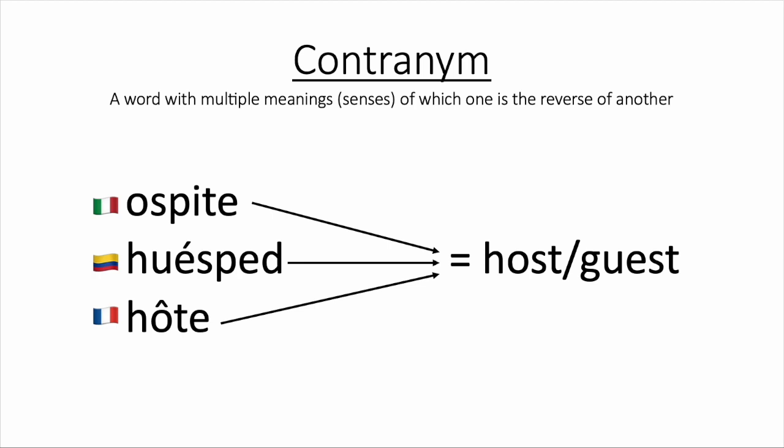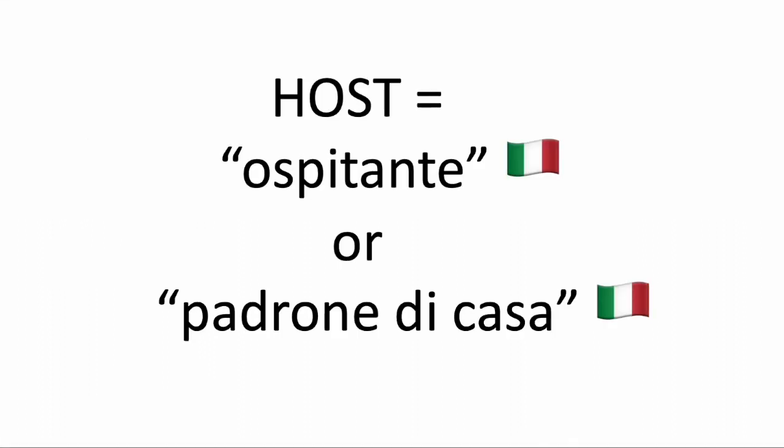You'd think, for example, Italians would be confused when they are told about a dinner party that they will be an ospite at. But apparently, and fortunately for everyone on the guest list — or is it the host list — it's always pretty clear from the context what their exact role in these dinner parties will be. Also, I should mention, in Italy today more and more people will use alternative words for host, such as ospitante or padrone di casa, to avoid the potential confusion associated with using the word ospite.